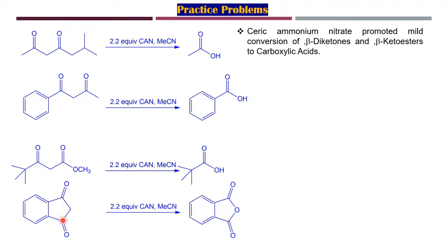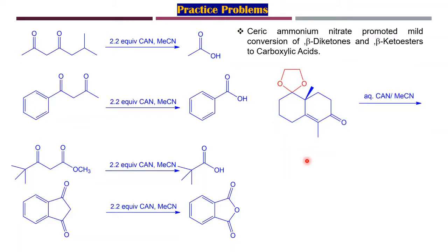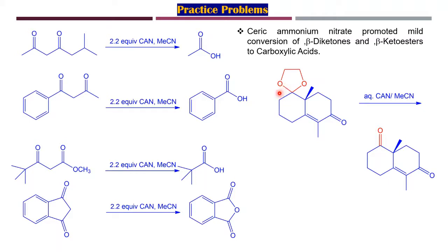During the reaction process, one product will be phthalic anhydride. The acetal or ketal linkage is being cleaved here, and the alcohol produced will again get oxidized, leading to further product formation. This is essentially cleavage of the keto functionality taking place in the presence of CAN.